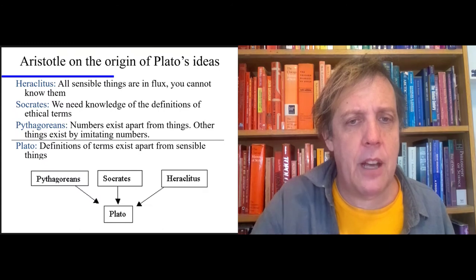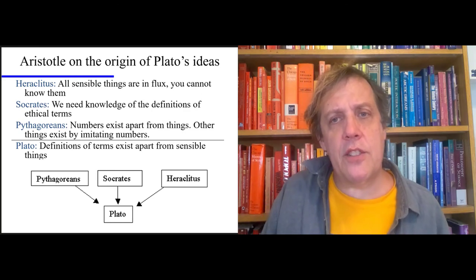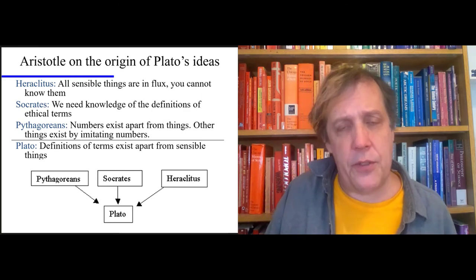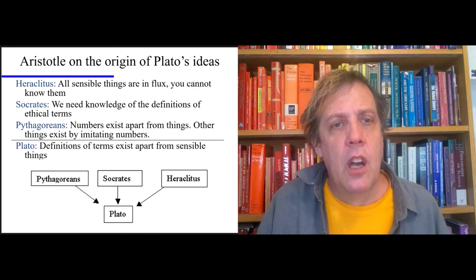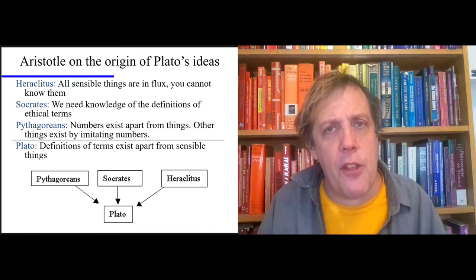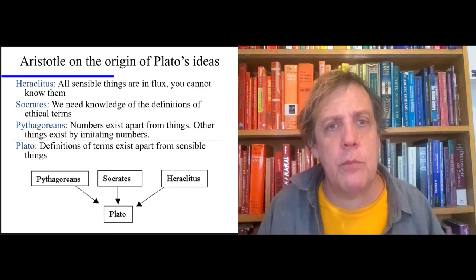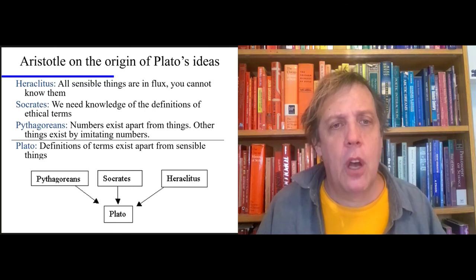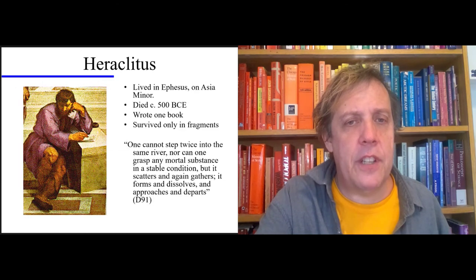So the Pythagoreans think of number as abstract entities that manage to bring together particulars. Now remember Socrates. Let's scooch back to the slide where these all come together. Socrates was looking for the definitions of ethical terms. And he didn't want just examples of ethical terms, like things like virtue or piety. He wanted something that could be explained in words. So we put these two together. We put Socrates and the Pythagoreans together and we get what Plato was looking for. Abstract ideas that can cover ethical terms.